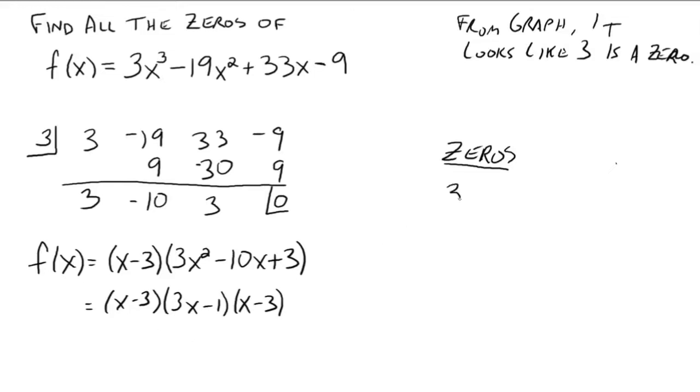Okay, so we have 3. And if 3x - 1 = 0, then x would be 1/3. And 3 is already there. So there are two zeros: 3 and 1/3.